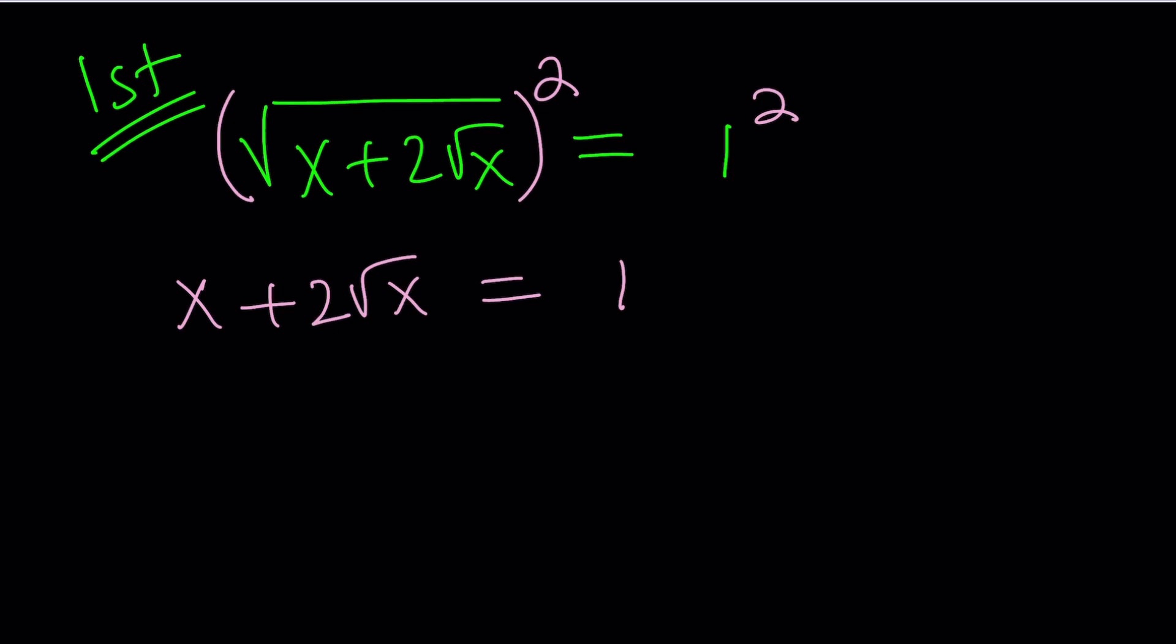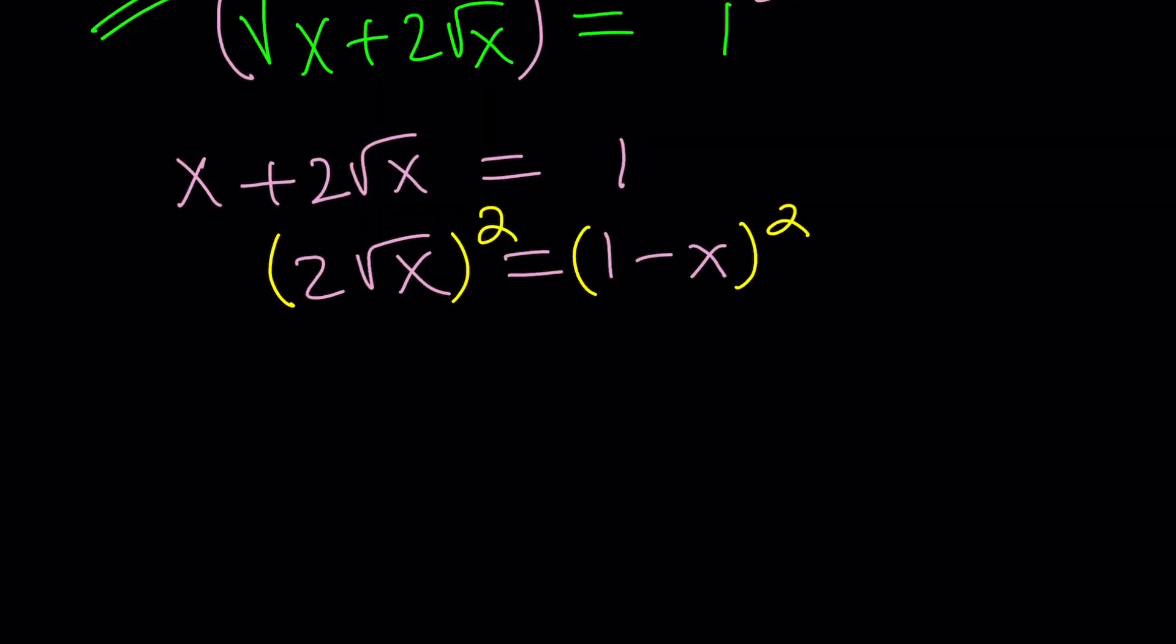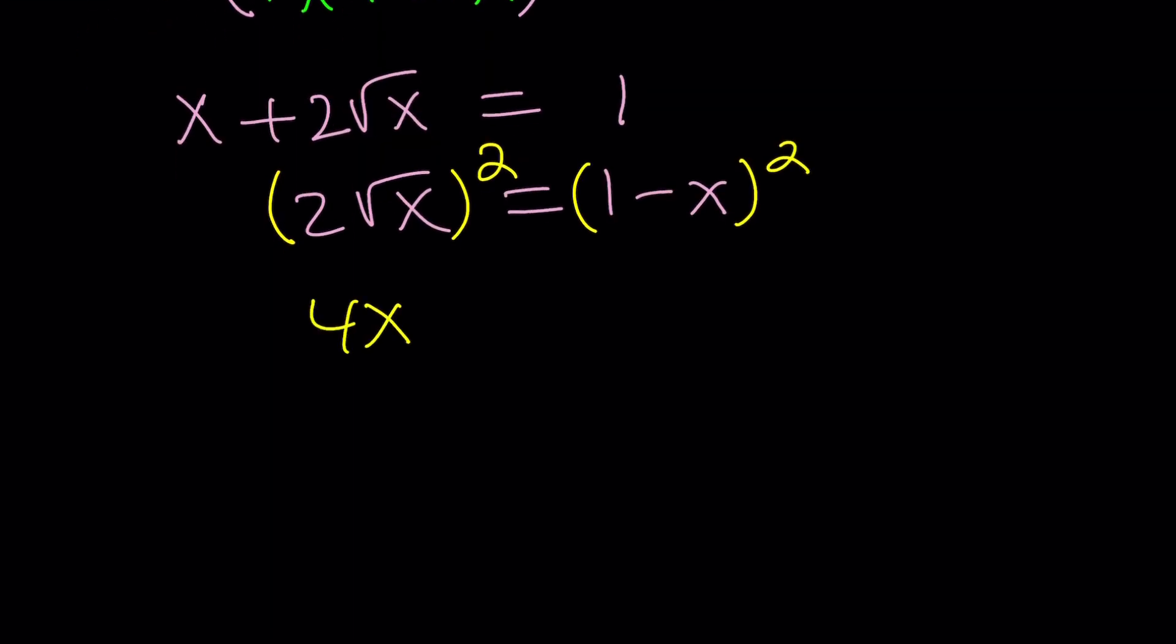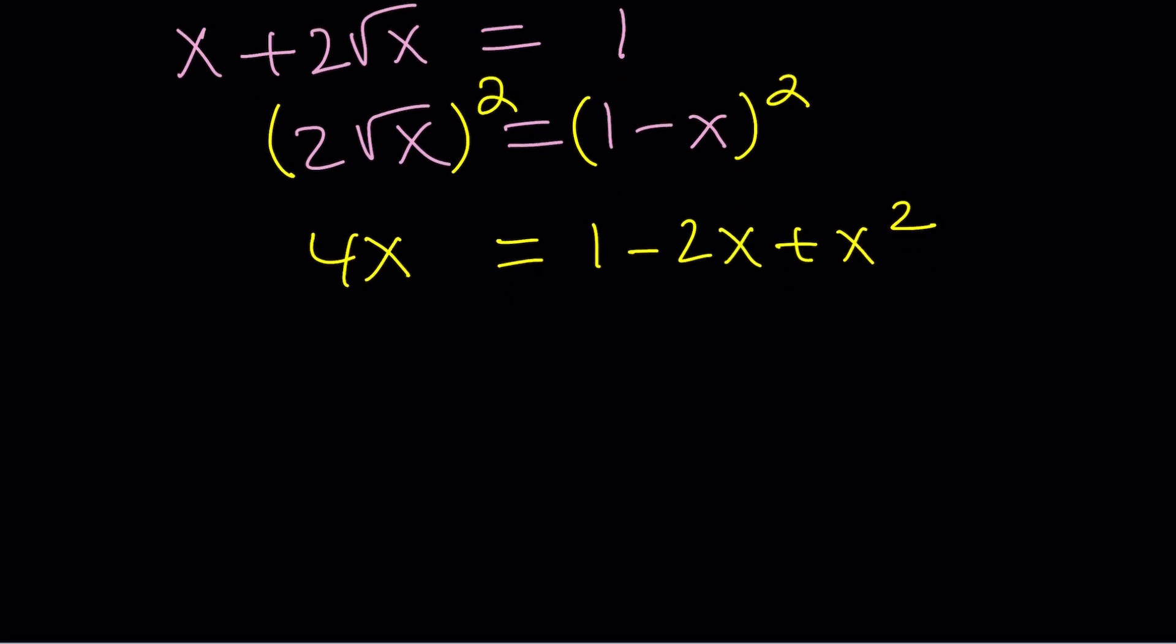And then we're going to go ahead and isolate the radical one more time, and then square both sides again. Obviously, the goal is to get rid of all the radicals. This gives us 4x because square root of x squared is x, and this gives us 1 minus 2x plus x squared. Now, let's go ahead and put everything on the right-hand side where x squared is positive, and then write that on the left-hand side. x squared minus 2x minus 4x, that's going to be minus 6x plus 1 equals 0.